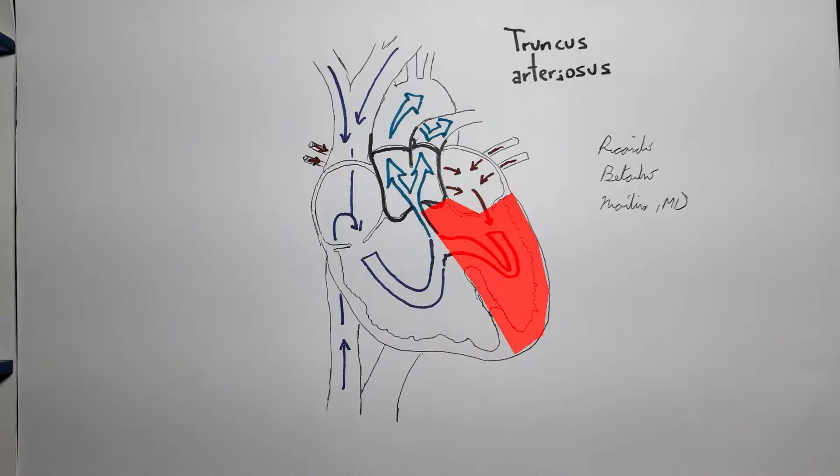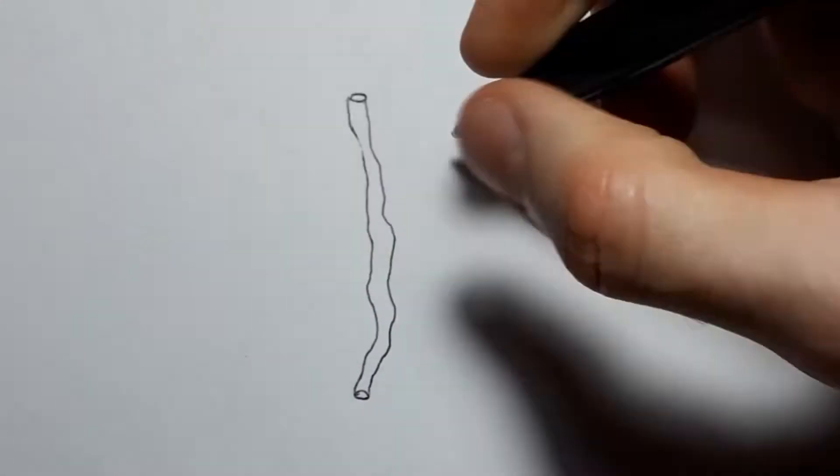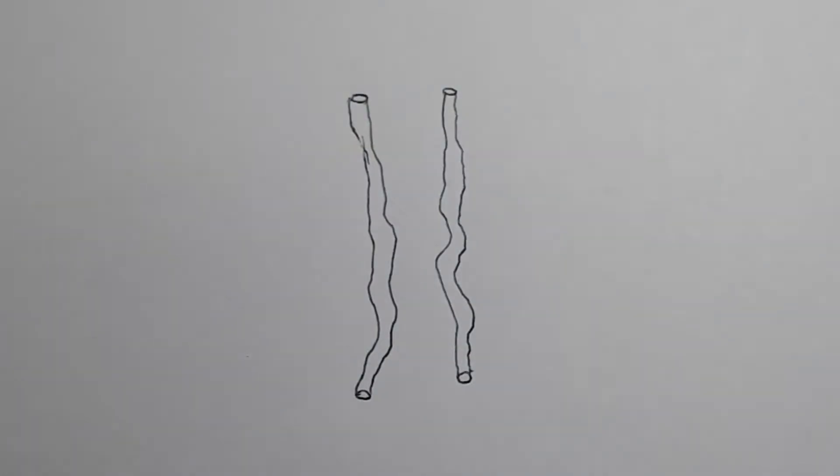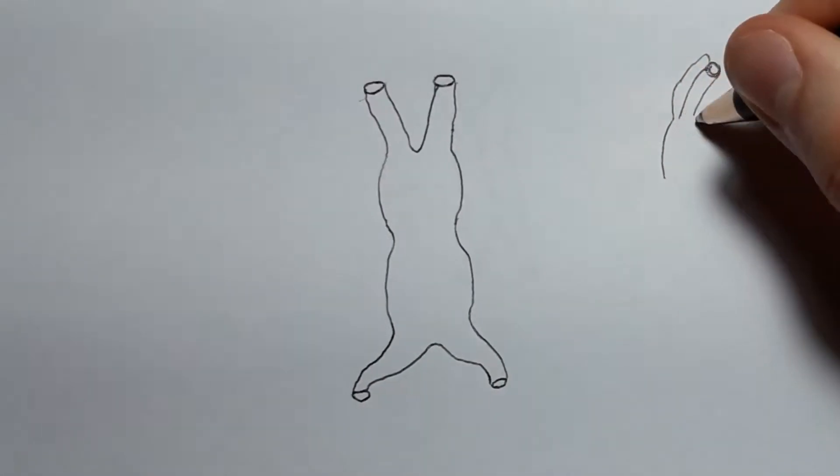Persistent truncus arteriosus is a cyanotic congenital heart disease or cardiac malformation. In cardiac embryology, the truncus arteriosus is the outflow tract of the primitive heart with its four dilatations.